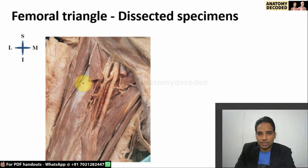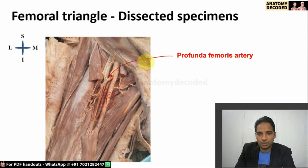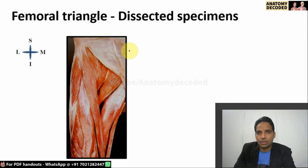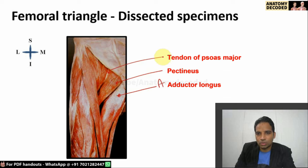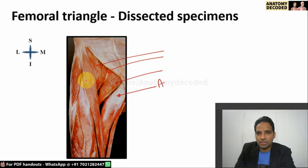In a dissected image where the sartorius has been cut to better expose the femoral artery, we can see the largest branch — the profunda femoris artery. Another image shows the floor of the femoral triangle: from medial to lateral, adductor longus, pectineus, tendon of psoas major, and iliacus muscle. The sartorius, visible here, is not part of the floor — it forms the lateral boundary.